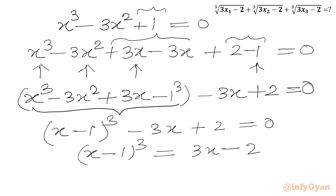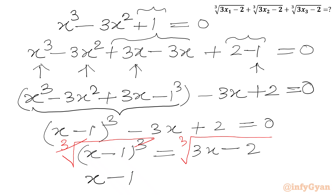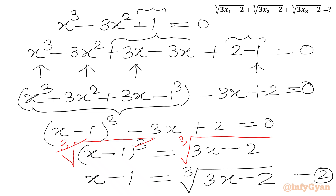Now we can take the cube root of both sides. The cube root and cube on the LHS cancel out, giving us x - 1 = ∛(3x - 2). Let us consider this equation number 2.